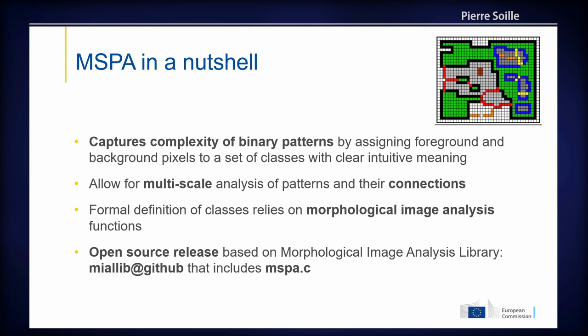You can use this on any kind of raster data for any kind of thematic classes, because it's basically a geometrical approach — obviously also at any scale, from meter resolution to kilometer resolution. The key feature is the connectivity detection, which is unique to this methodology. We use morphological image analysis functions to apply this, and the open source release is based on the mia lib library, including a C code called mspa.c.